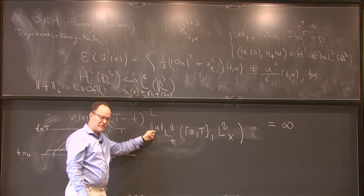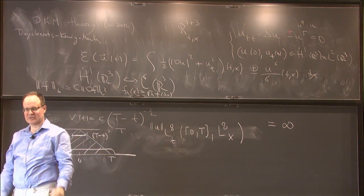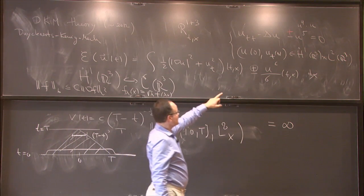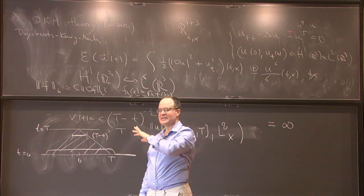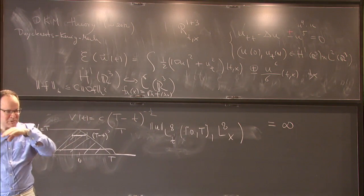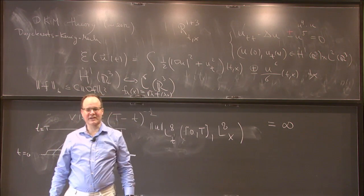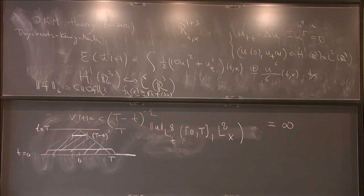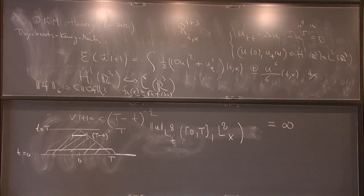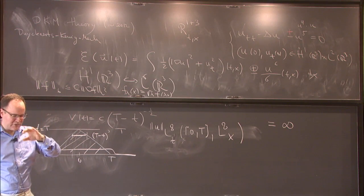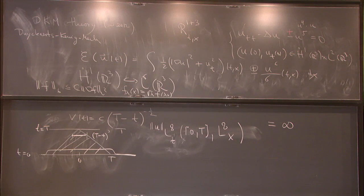The well-posedness theory says: if such a Strichartz norm remains finite up to some time, then you can continue the solution beyond that time. An embarrassment to the field: if you replace u^5 by u^7 — supercritical — there is no global theory. There is a local theory, but we do not know if smooth compactly supported data for the +u^7 wave equation lead to blow-up or not. Nobody even has a good conjecture, even in the radial case.